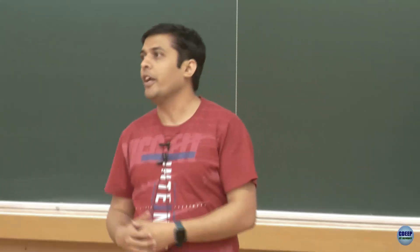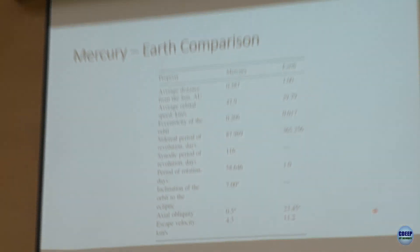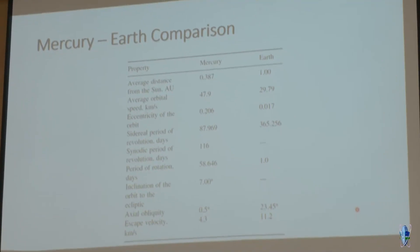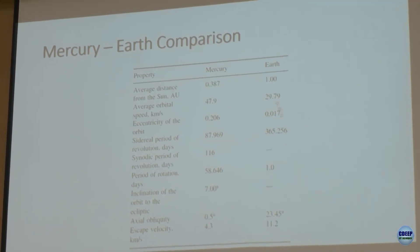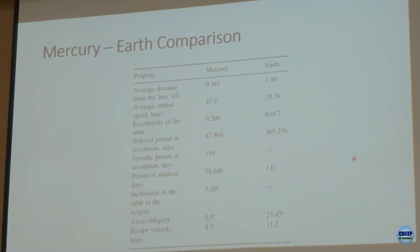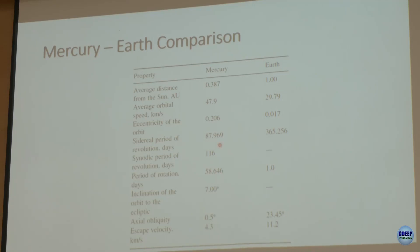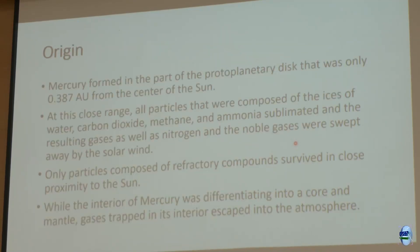Here's a summary table of Mercury's parameters: 0.387 AU from the sun, orbital period 87.969 days, obliquity 0.5°, compared to Earth's ~23.5° tilt and 365.2-day year. These are more precise numbers than the approximate ones I gave earlier.